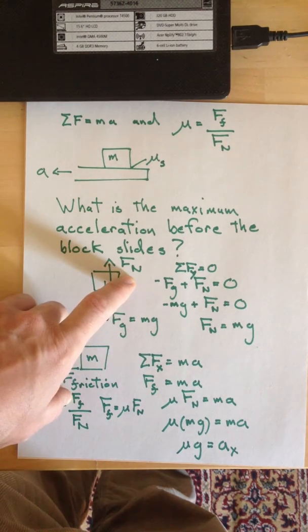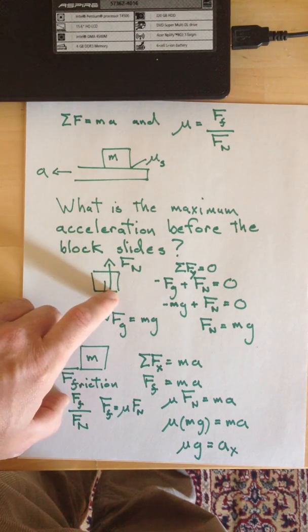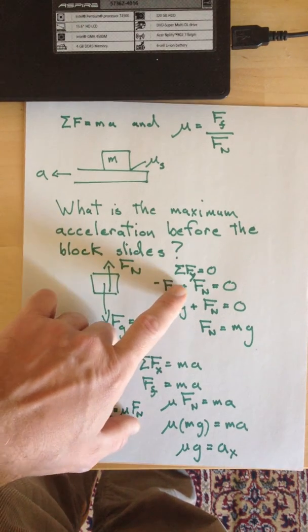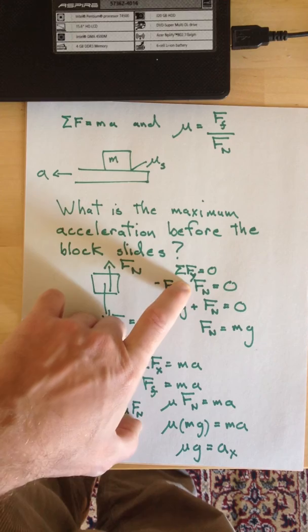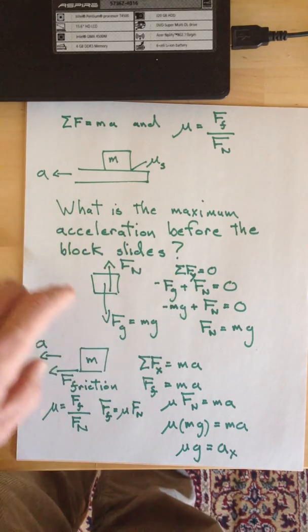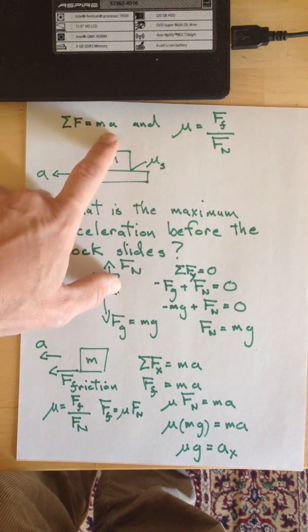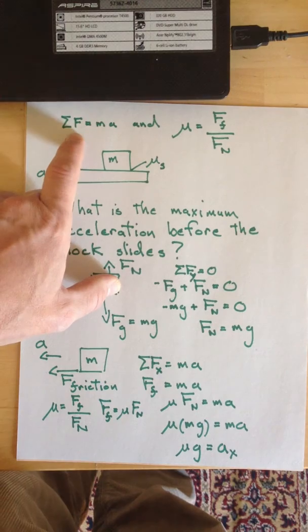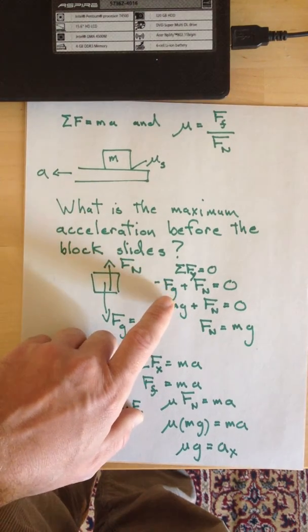Normal just means perpendicular. So the sum of the forces in the y direction are zero because it's not accelerating in the y direction. If a equals zero, then the net force has to equal zero. So we just have two vertical forces.